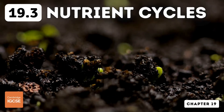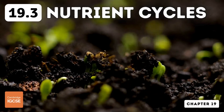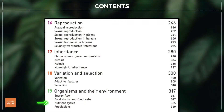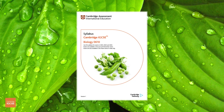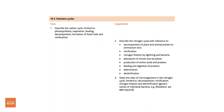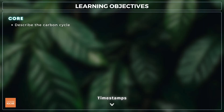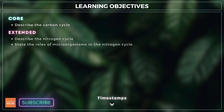Hello and welcome to another complete Cambridge IGCSE biology lesson where you'll learn absolutely everything you need to know on topic 19.3 nutrient cycles. As always we'll be following the Cambridge syllabus exactly. For topic 19.3 you need to describe the carbon cycle, and for extended, describe the nitrogen cycle and state the roles of microorganisms in the cycle.